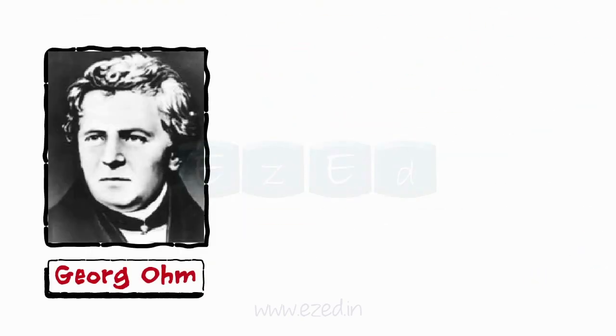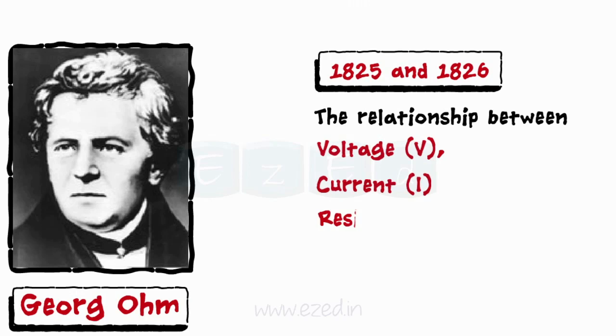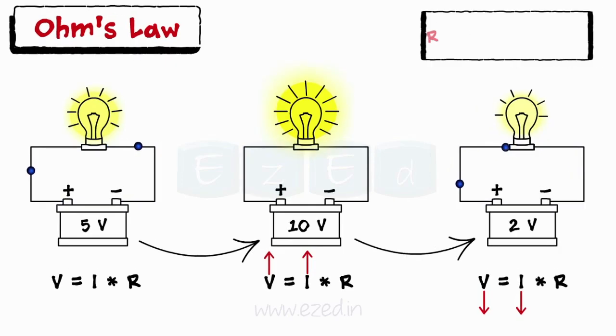George Ohm in 1825 and 1826 discovered the relationship between voltage, current and resistance in a DC circuit, which is now called as Ohm's law. According to his research, at normal conditions, an increase in the applied voltage leads to an increase in the current through the circuit and a decrease in the voltage reduces the current proportionally. Thus, the ratio V upon I always remains constant and is called as resistance.